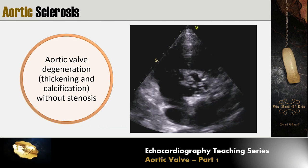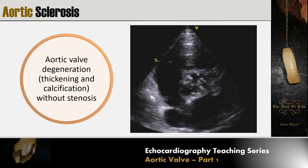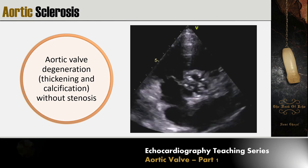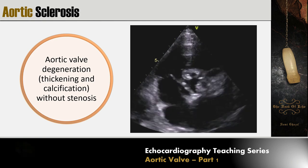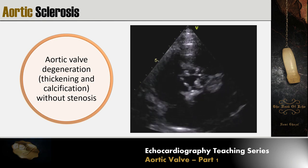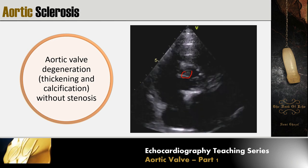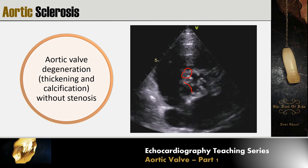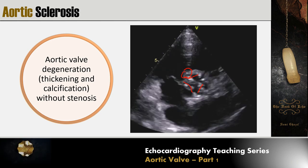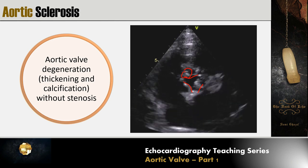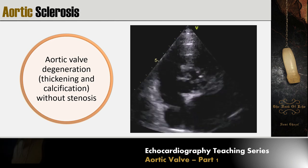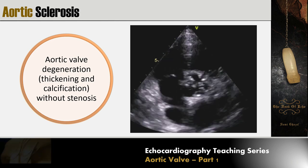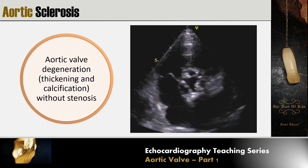Moving on to aortic valve sclerosis: if we have degeneration — thickening and calcification — without stenosis, we call it aortic sclerosis. By definition, aortic sclerosis does not have stenosis. The valve opens well despite the thickening and calcification involving the leaflet body, commissures, and tips.